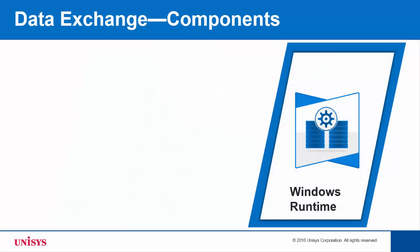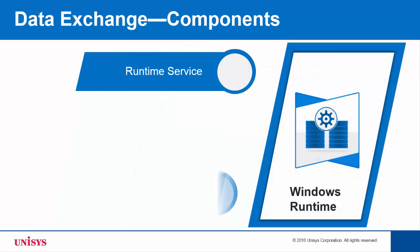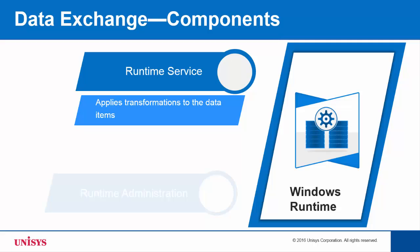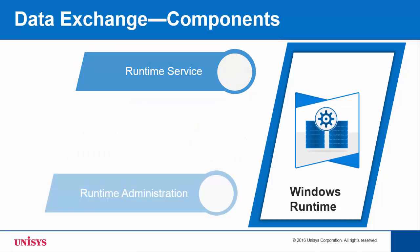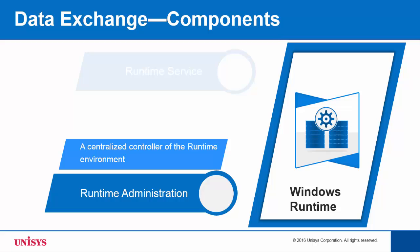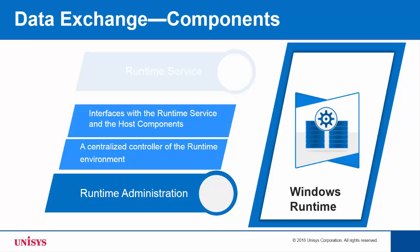Data Exchange Windows Runtime comprises Runtime Service and Runtime Administration. Runtime Service applies the transformations to the data sourced via bulk data transformation and/or change data transformation, and posts the transformed data to the transformation targets. The data is processed and posted in the correct order without duplication or loss of data for all active transformations. Runtime Administration is the centralized controller of the Data Exchange runtime environment, interfacing with Runtime Service and the host components to provide reporting and monitoring of the overall health of the system.